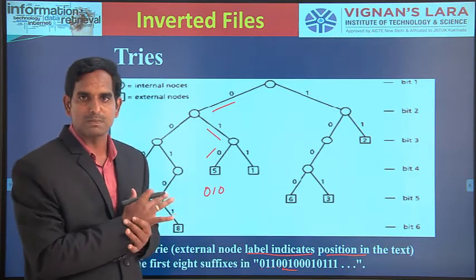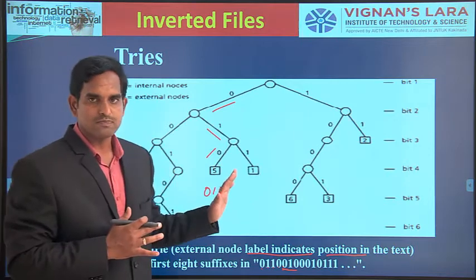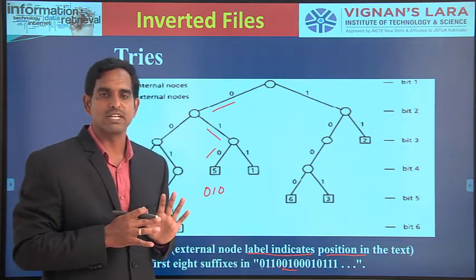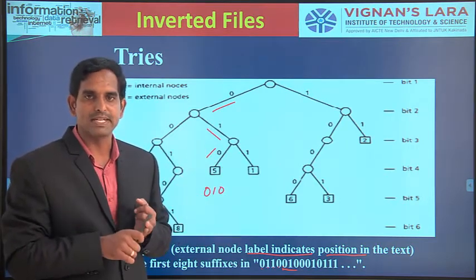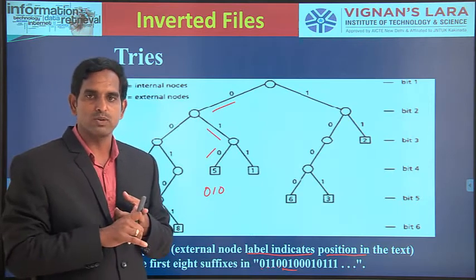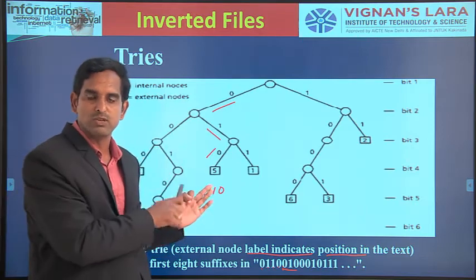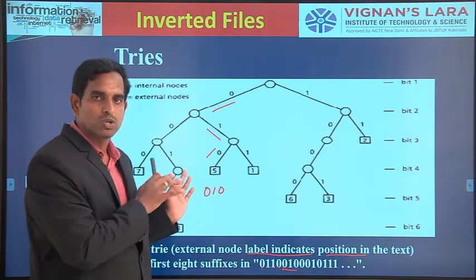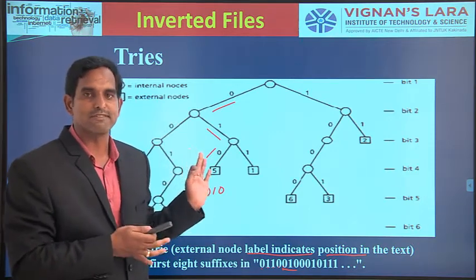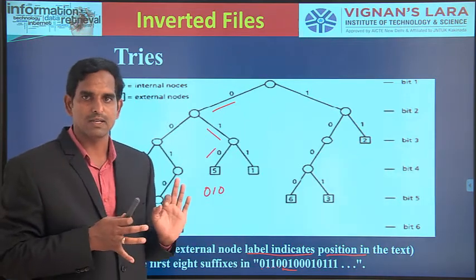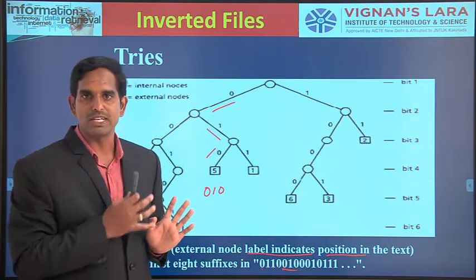Patricia tries will be seen in the next session. For the time being, know that tries are also used to implement your inverted files. So inverted files will be implemented using sorted arrays, B-trees, and tries. Hashing technique is also possible but much more complex, so we will use just the three. In this part we have seen what are the structures which will be implementing your inverted files.